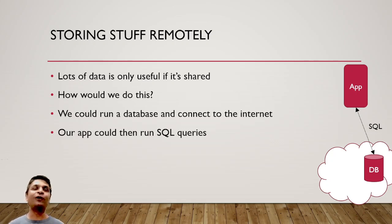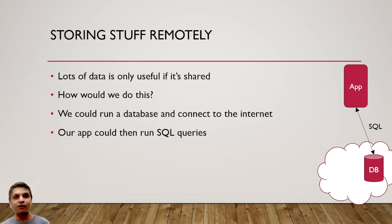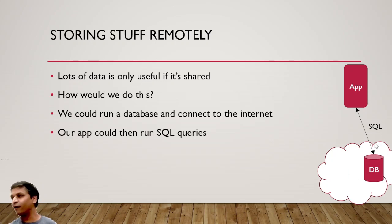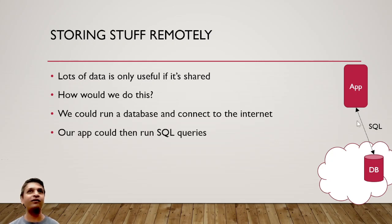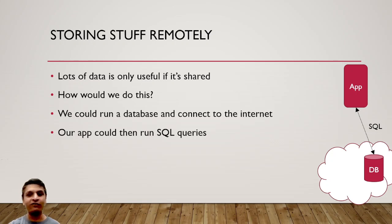Storing stuff locally isn't always great because lots of data needs to be shared — it's only useful if it's shared. The most straightforward architecture you can think of is: you've got the cloud, and in the cloud you've got a database. Your app then directly connects to the database using SQL and gets the data it needs. This would be very similar to what you did in Lab 4 — you can just say 'select star from students,' send it to your MySQL database, and get a result. That sounds quite cool — you just connect directly to a database and all is good.